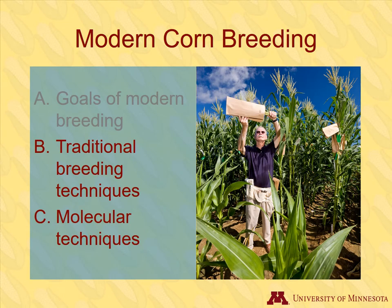Now that we know what some of the goals of modern breeding are, we can examine the techniques. We will first discuss what is called traditional or conventional breeding. You will see that even with new advances in technology, traditional techniques are still an important part of the breeding process.